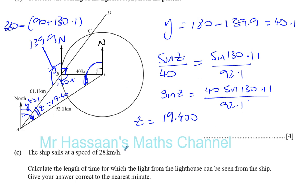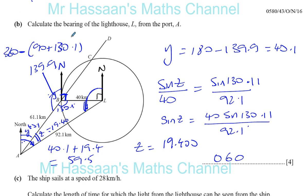Therefore the bearing we want is 40.1 plus 19.4. That gives you 59.5. Now a bearing is written with three figures to the nearest degree. So you can put 060 if you want to put a bearing. The bearing should be written with three figures.